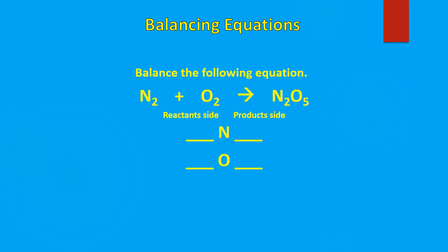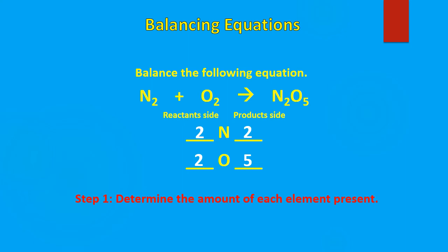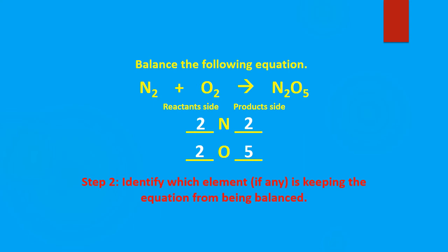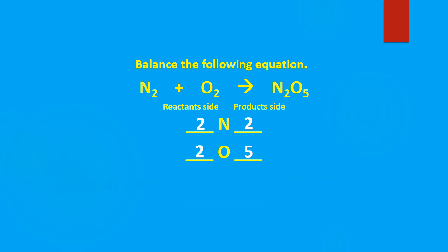So now that we were able to identify a balanced equation, let's look at how to balance a chemical equation. You're given a chemical equation and you're asked to balance it. The method we're using to introduce this is called the accounting method, where we look at how much we have on the reactant side and how much we have on the product side and move from there. Step one: determine the amounts of each element present. For nitrogen, we have two on the reactant side and two on the product side. For oxygen, we have two on the reactant side and five on the product side. Step two: identify which element is keeping the equation from being balanced — and we see here that oxygen is keeping this equation from being balanced.